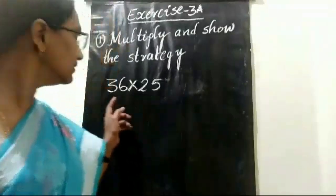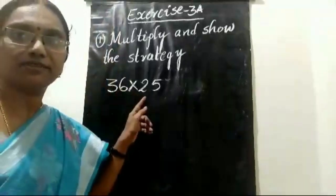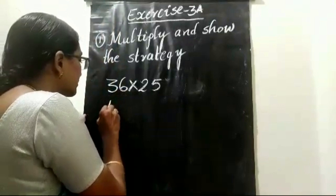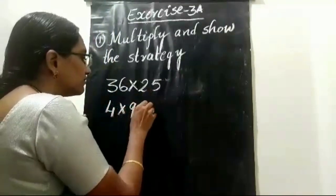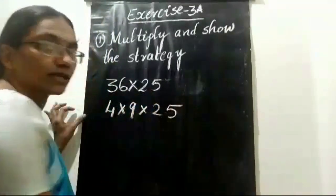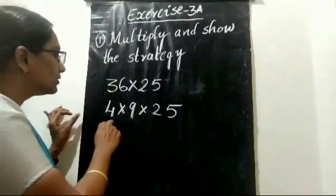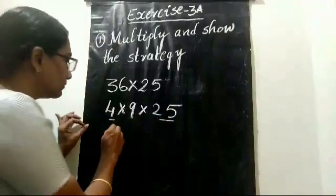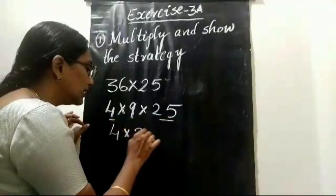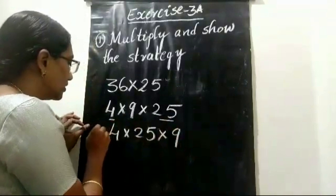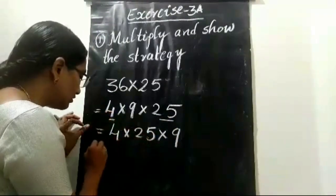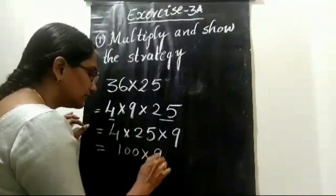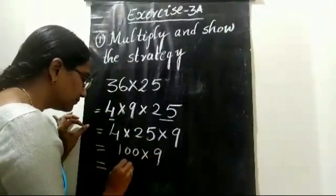See this example: we can break up 36 as 4 into 9, and use 25 as it is. Consider 4 into 25 into 9. 4 twentyfives is 100, then 100 into 9 equals 900.